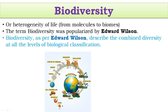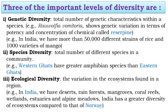Biological organization starts from biomolecules, goes to cell organelles, then cell, tissues, organ, organ system, organism, population, community, ecosystem, biomes, and the full biosphere. Diversity exists at all these levels, and the combination of diversity at all these levels forms biodiversity. In our textbook we discuss only three important levels of diversity.